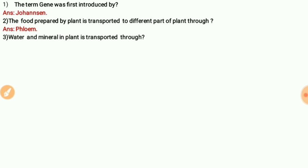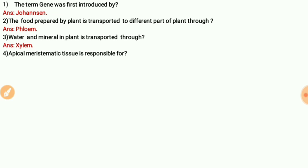Then, water and minerals in plants are transported through — phloem transports food, but for water and minerals the answer is xylem. Xylem transports water and minerals to the different parts of the plant.